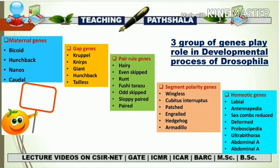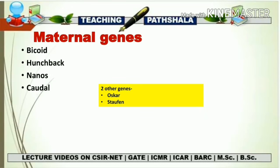During axis formation — mainly the anterior and posterior — there are different maternal genes which play a very important role. The genes we are going to discuss in this video are bicoid, hunchback, nanos, and caudal. Along with these, we will also see some more genes such as Oscar and Stephen.